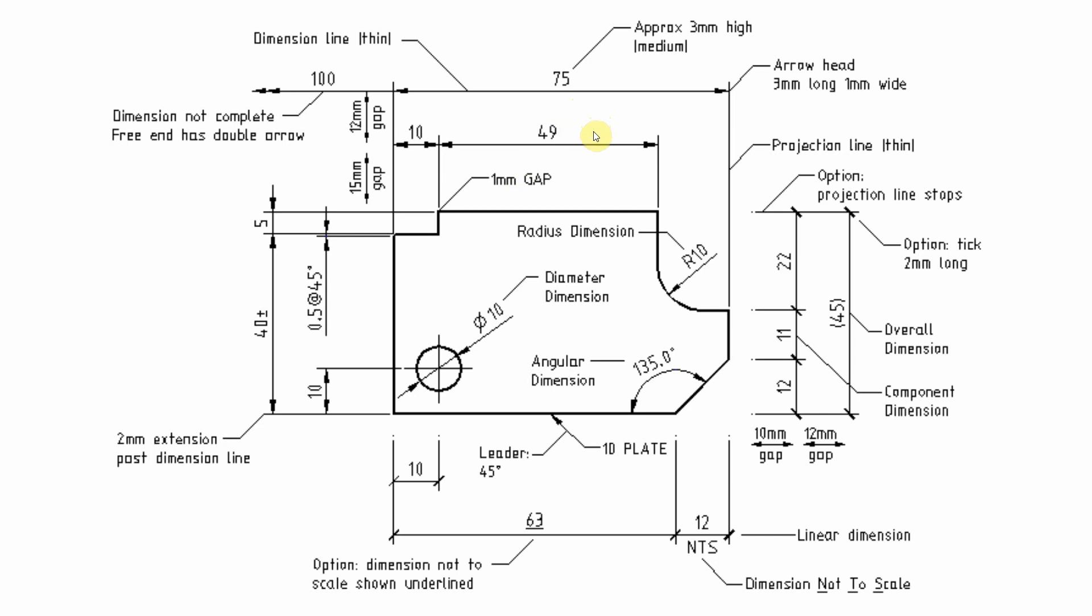Now dimensions that are not to scale for some reason are underlined as the example is shown here, or they have NTS. Now NTS is probably the better way, and if you've got space, put the whole word not to scale.